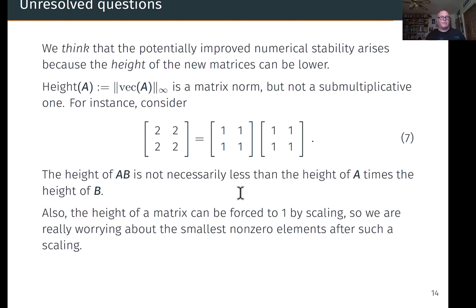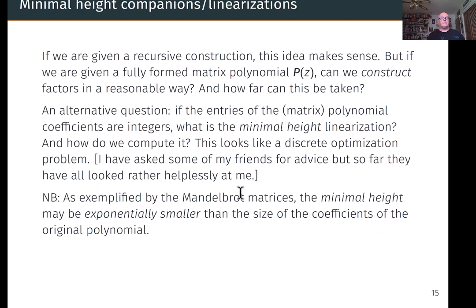What's the height of a matrix? The height of a matrix is the infinity norm of the vectorization of A. So it's the absolute value of the largest element in the matrix. It's a matrix norm, but not a sub-multiplicative norm, which kind of messes up a lot of our techniques. So the height of AB is not necessarily less than the height of A times the height of B. And of course, we can force it to be 1 by scaling. So we might profitably think about what is the smallest non-zero element.